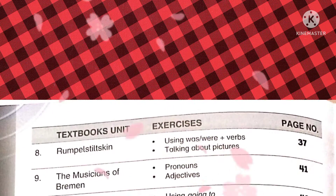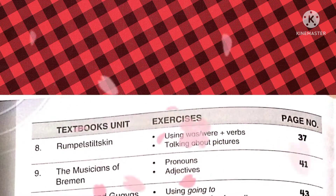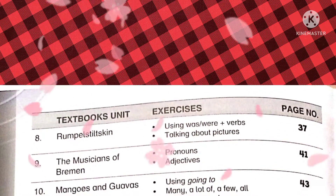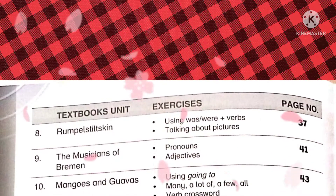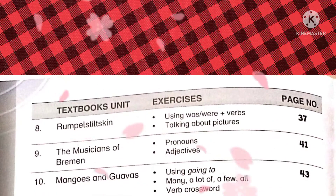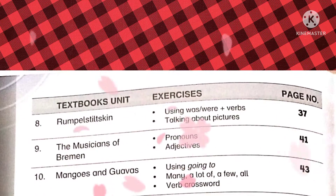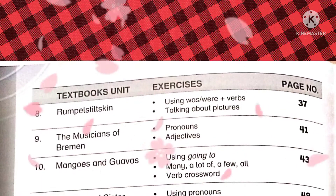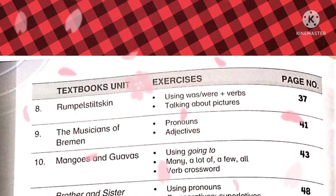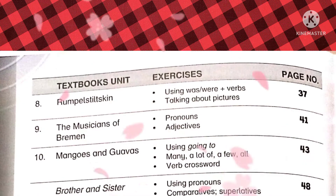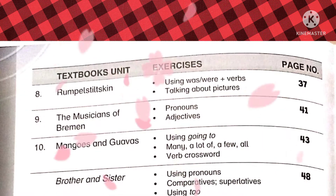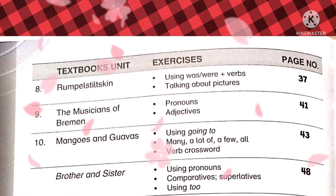In unit eight, 'Rumpelstiltskin,' we will learn using 'was' and 'were' plus verbs, and talking about pictures. Next is unit number nine, 'The Musicians of Brahman.' We will learn pronouns and adjectives. This is followed by unit number ten, 'Mangoes and Cows.'